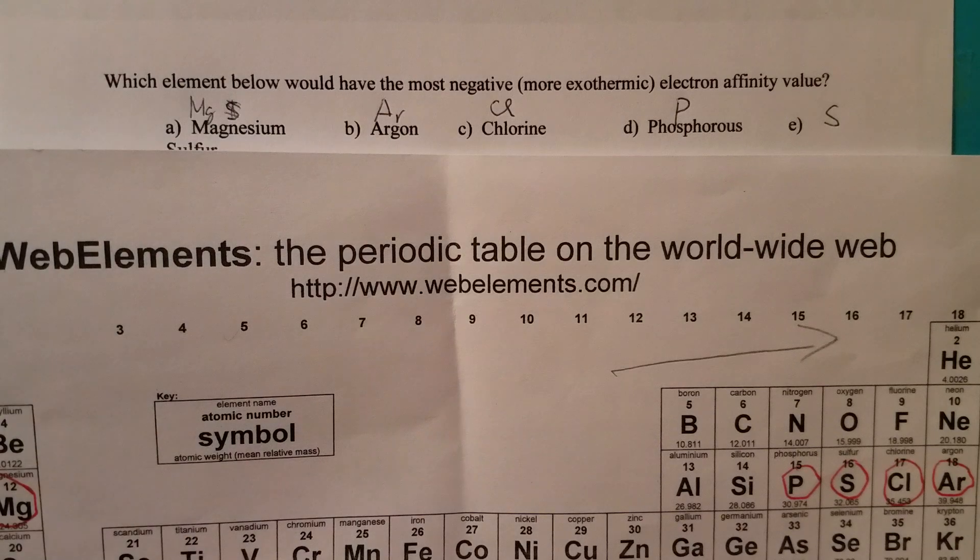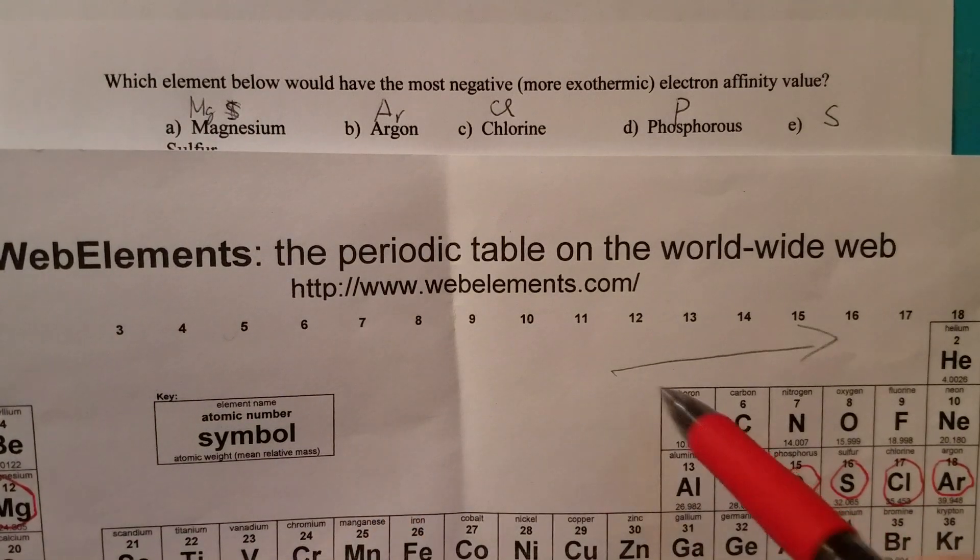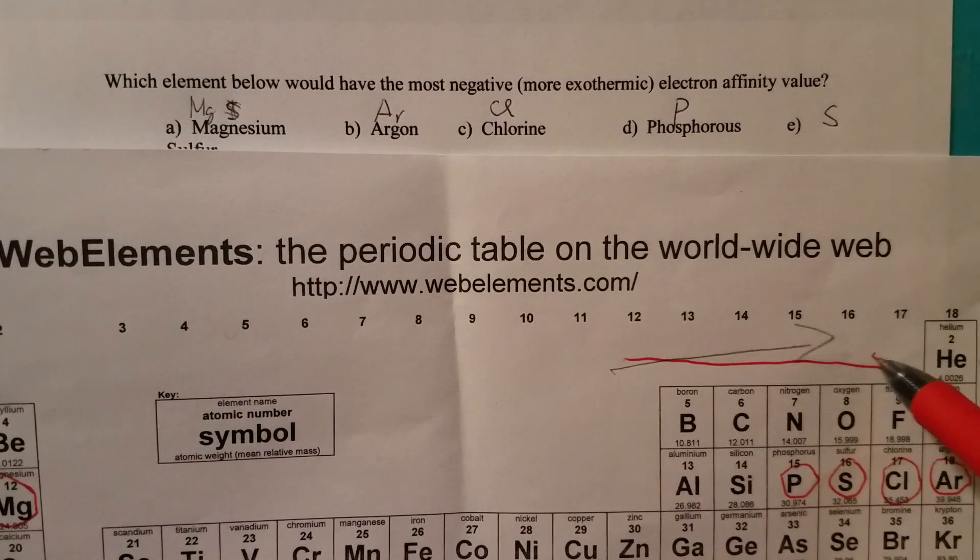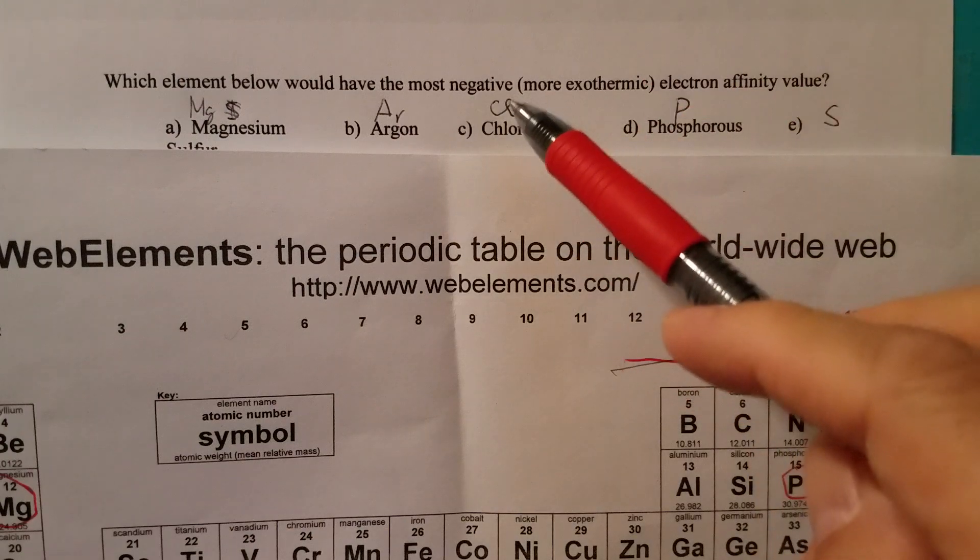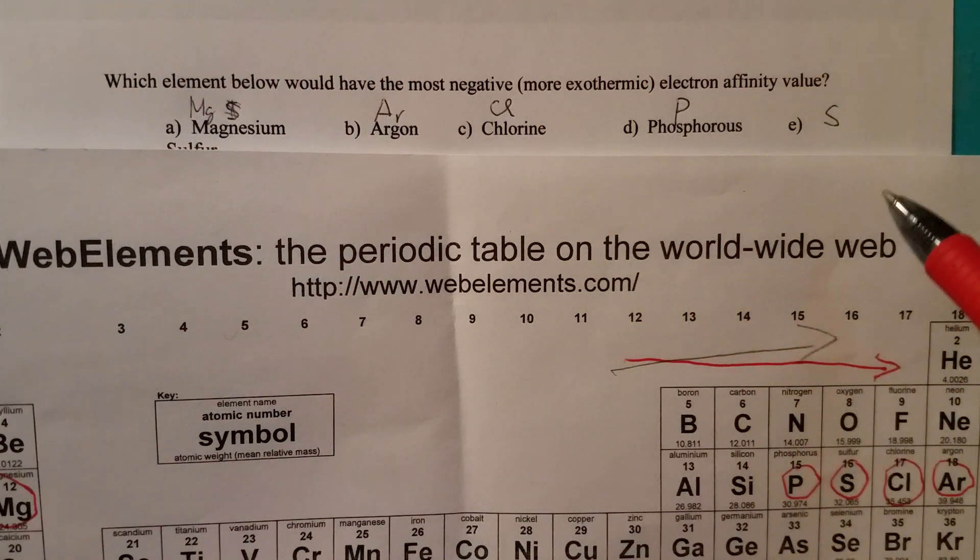Now it is clear to us all five elements are in the third period. So therefore we can just use this arrow analysis. The one on the right should have the most negative electron affinity. Then you may say, okay, the answer is argon.